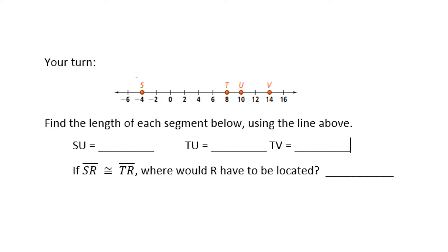It's your turn. Pause the video before moving forward so you can do your work and then check your answers. Welcome back. Did you get SU equals 14, TU equals 2, TV equals 6, and that R should be located at 2 so that segments SR and TR are congruent? If not, we should probably talk.